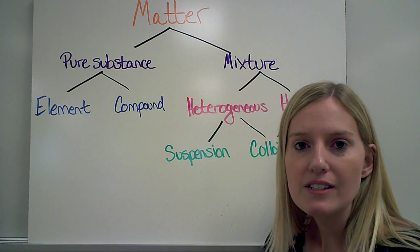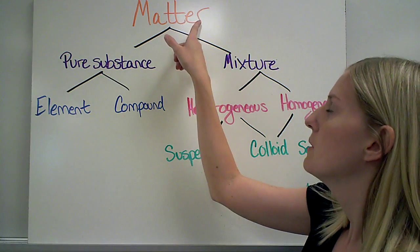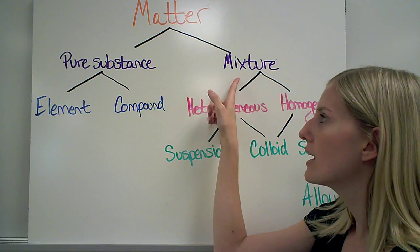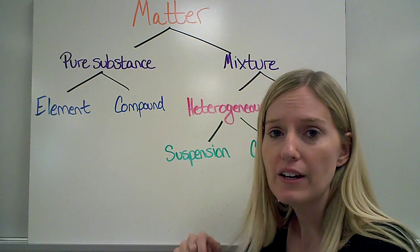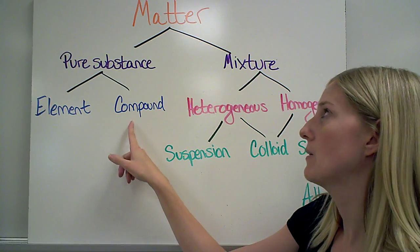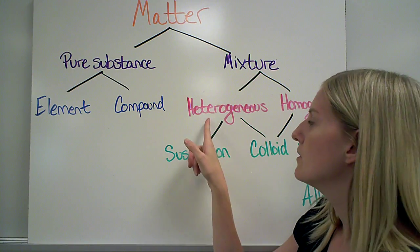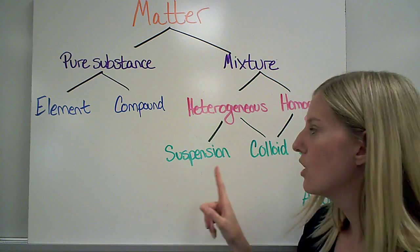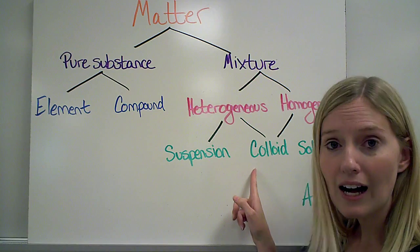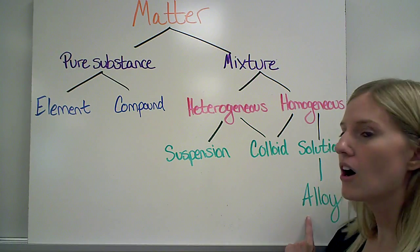So matter is classified into different areas. So matter, any piece of matter, is either a pure substance or it's a mixture. From there, I get even more specific. So a pure substance is either an element or a compound. A mixture is either heterogeneous or homogeneous. Heterogeneous mixtures can be suspensions or colloids. Homogeneous mixtures can be colloids also, or solutions. A specific example of a solution is called an alloy.